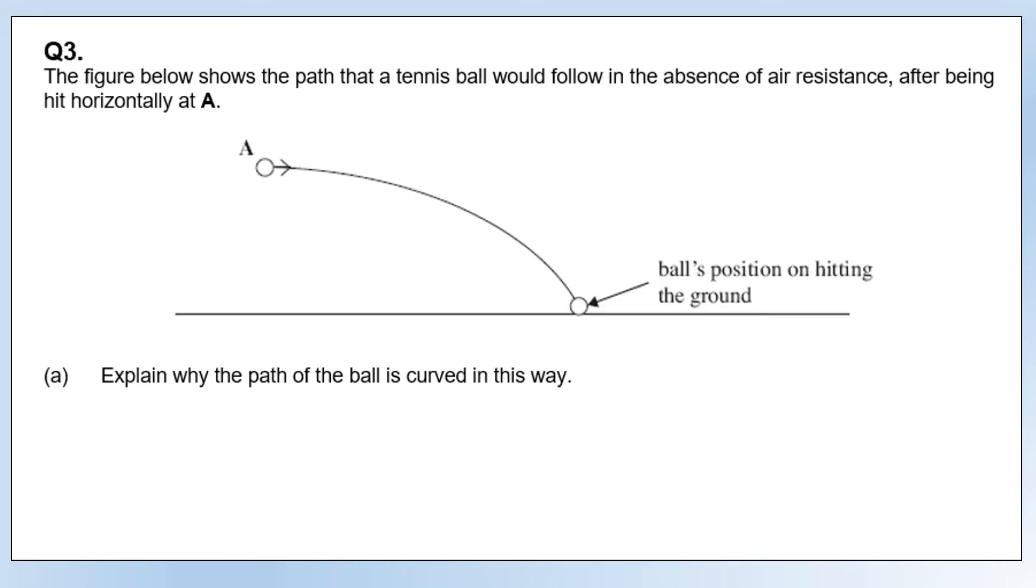Moving on to a projectile type question: we've got the path of a tennis ball in the absence of air resistance, hit horizontally at A as you can see. First, explain why the path of the ball is curved.